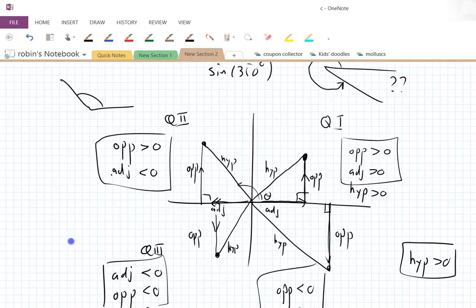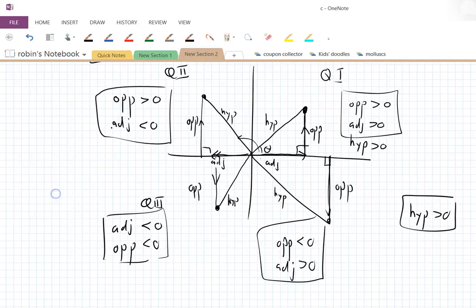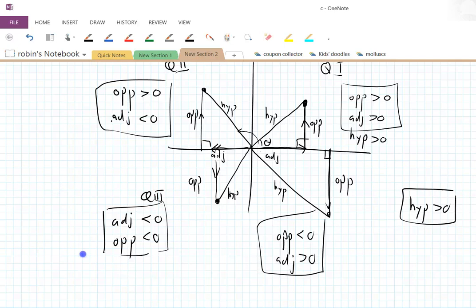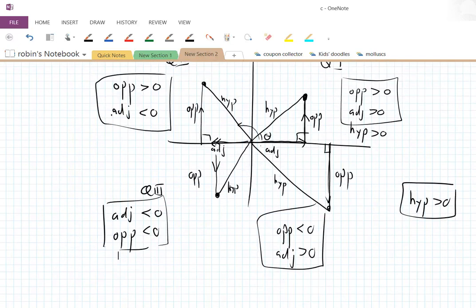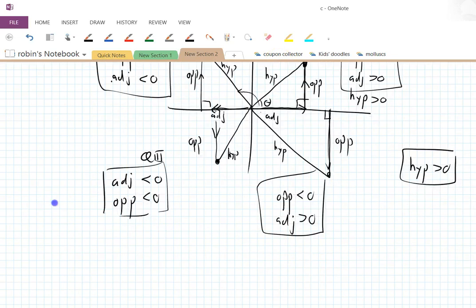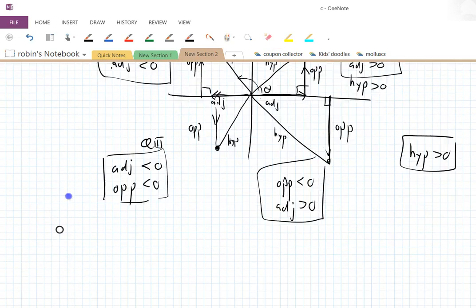After a while staring at this diagram here, you realize it's quite simple because the opposite just refers to the y-axis of the point, and the adjacent just refers to the x-axis, so it's not difficult. But it can be confusing, so I wanted to go through that in some detail.